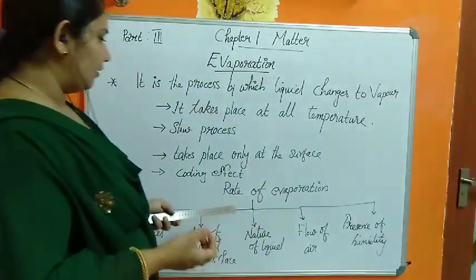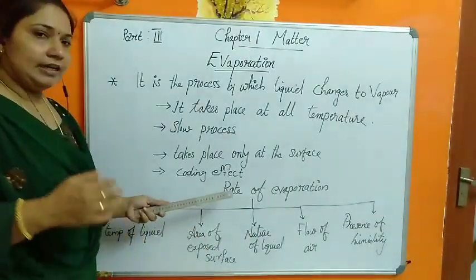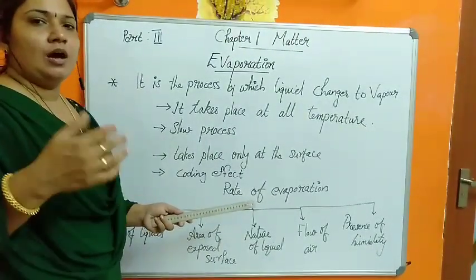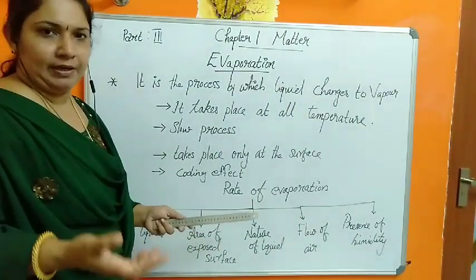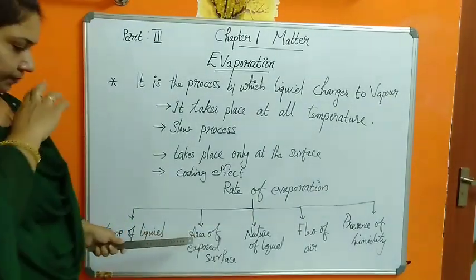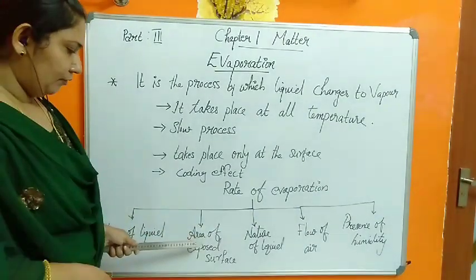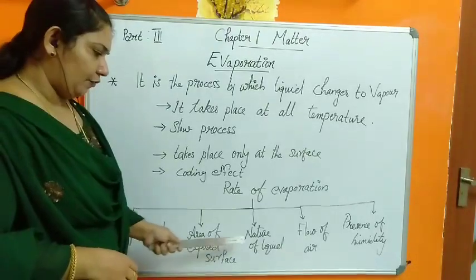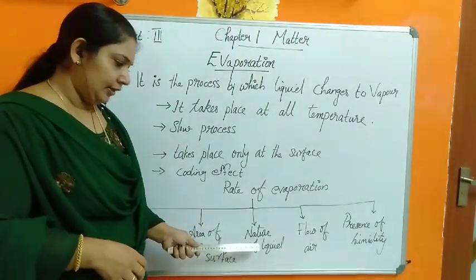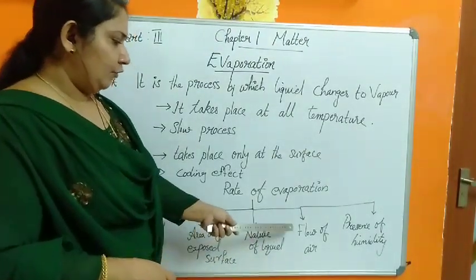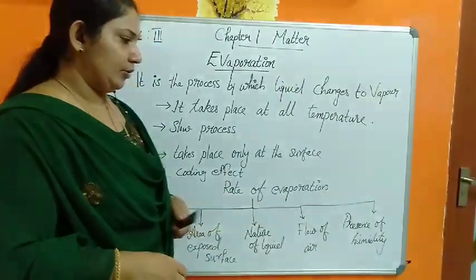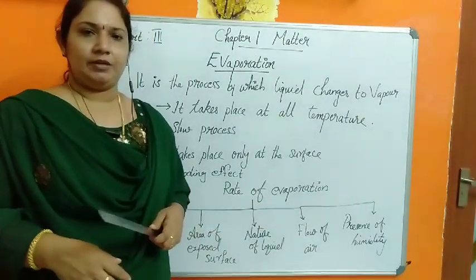So these are the five factors on which rate of evaporation depends: first, temperature of the liquid; second, area of the exposed surface; third, nature of the liquid, that is volatile liquids; fourth, flow of air; and the last one, presence of humidity.